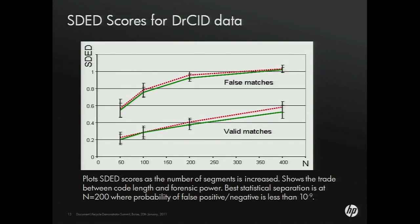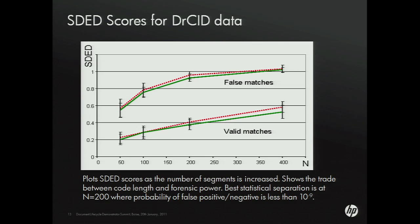If we look at how this parameter behaves as we change the number of elements used to represent SDED, we can plot false matches against valid matches and find that the best value is to use about 200 elements to describe each character — that gives us an optimal separation between correct and valid matches. That's the basic technique, and as those who came to the demonstration today will have seen, it gives a really strong ability to uniquely identify printed instances.